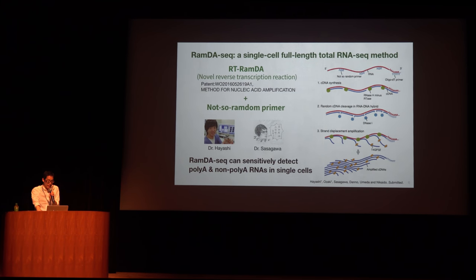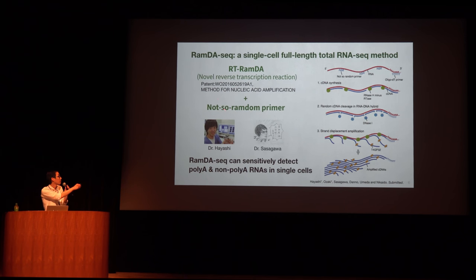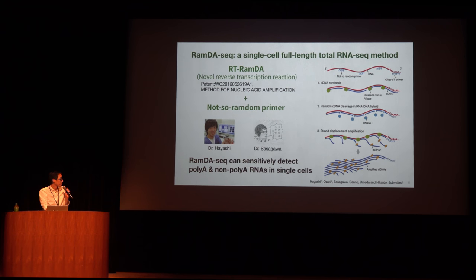So, how to measure eRNA transcription in single cells? Dr. Hayashi and Dr. Sasagawa in our lab recently developed a single-cell full-length total RNA-seq method called RamDA-seq. RamDA-seq employs a novel reverse transcription reaction, RT-RamDA, and not-so-random primers. Based on these technologies, RamDA-seq can sensitively detect poly-A and non-poly-A RNA in single cells.